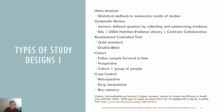Randomized controlled trials are sometimes considered the gold standard in research as they can provide results that determine cause and effect relationships. They start with a research question, an intervention, and a control group. With randomized trials, participants are randomly assigned to two or more groups — typically one group receives a treatment or protocol and the other receives a placebo.